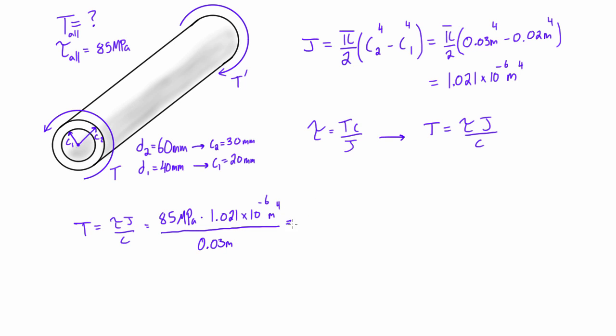Alright, now we're going to play with the units here a little bit. So we're going to convert 85 MPa into, that's 85 times 10 to the 6 Pascals. But Pascals are also newtons per meter squared, so we'll just do ourselves a favor and write it like that right away. We'll bring in this same unit here, so 1.021 times 10 to the minus 6 meters 4. And then again, this will just stay at 0.03 meters.